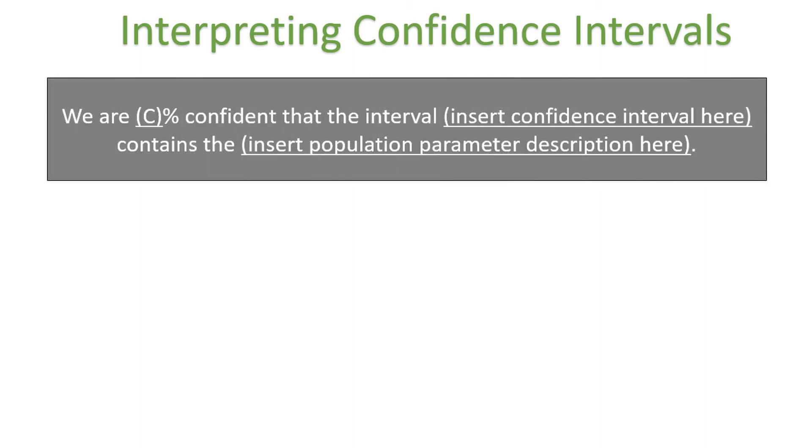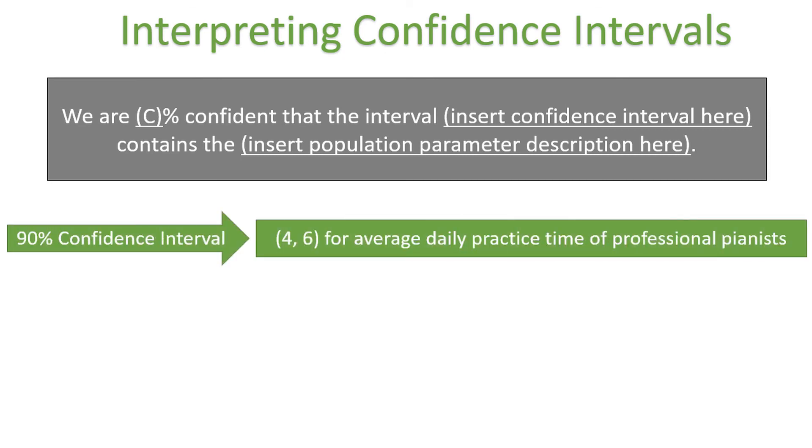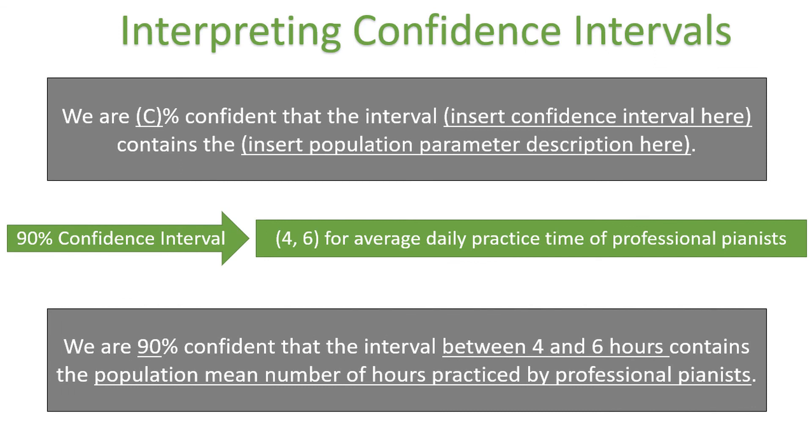In general, I like the following interpretation of any given confidence interval. We are c% confident that the interval contains the insert population parameter description here, where the parentheses represent wording that should change with each confidence interval. For example, this 90% confidence interval for average practice time of professional pianists could be interpreted in this way. We are 90% confident that the interval between 4 and 6 hours contains the population mean number of hours practiced by professional pianists. Follow this cookie-cutter interpretation by filling in the blanks, and you should never go wrong.